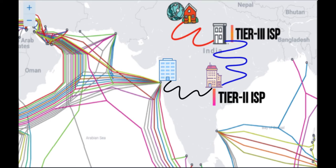All the fiber optic cables we see connected between nations are connected by tier 1 ISPs. The job of tier 1 ISP is to connect nations around the globe. All tier 1 ISPs connect with each other, then provide service to tier 2 ISP, which provides service to tier 3 ISP, and tier 3 ISP provides service to us. That is how we are all connected using this hierarchy.